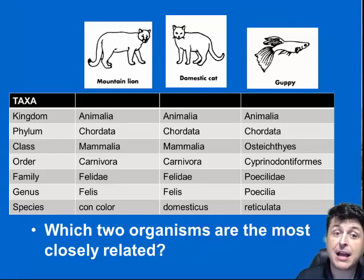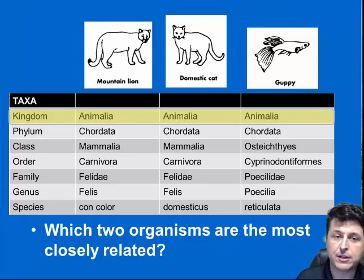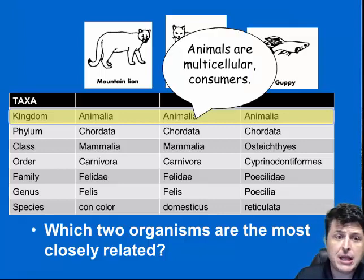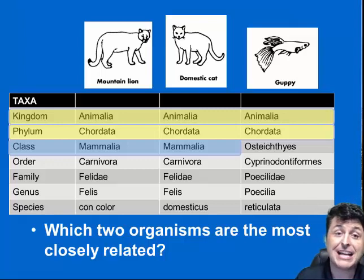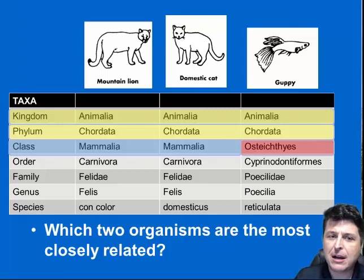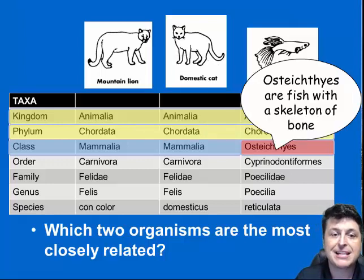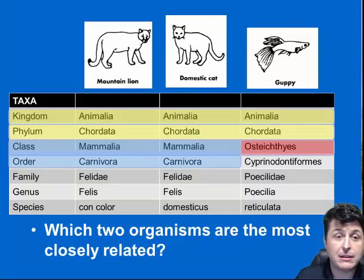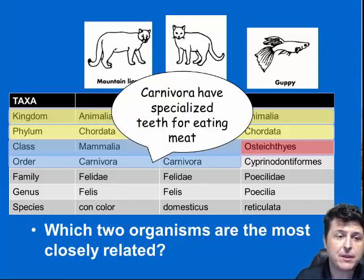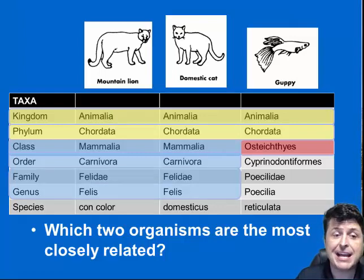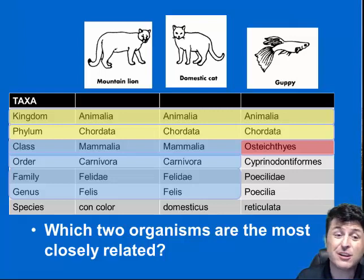Our mountain lion and domestic cat have a lot more in common. All these organisms are in kingdom Animalia — multicellular eukaryotic heterotrophs with no cell walls. They all have a nerve cord, so they're all Chordata. But the mountain lion and domestic cat are in class Mammalia — they have hair and milk glands — while our guppy is Osteichthyes, a bony fish with a skeleton of bone. The lion and domestic cat are both in order Carnivora with teeth designed for chewing meat. They share the same family and genus of cat, but what makes them different is their different species — and species are groups of interbreeding organisms that can produce fertile offspring in nature, and these two can't do that.